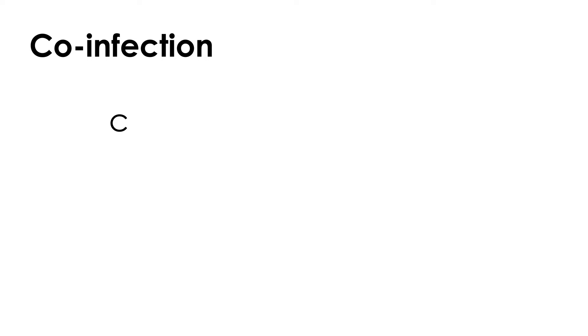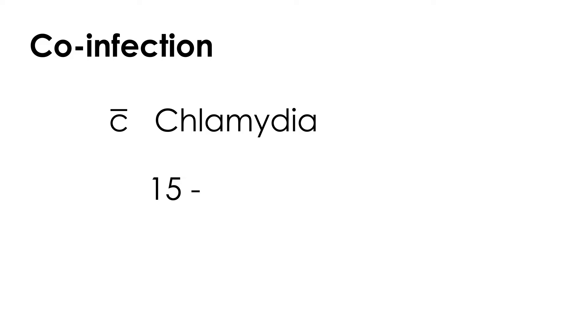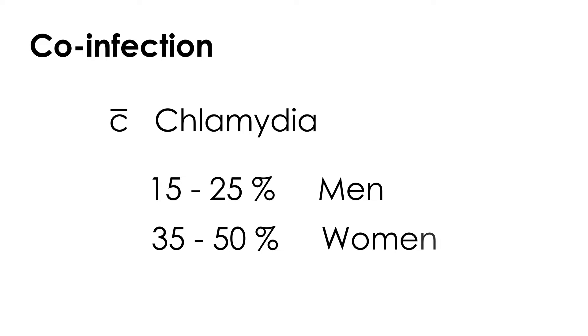Co-infection with chlamydia, another sexually transmitted disease, is quite common. It can happen in 15 to 25 percent of men and 35 to 50 percent of women who get gonorrhea. Because co-infection is so common, when they treat gonorrhea, they treat chlamydia at the same time.